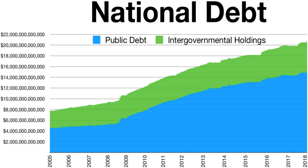According to the Government Accountability Office, the United States is on a fiscally unsustainable path because of projected future increases in Medicare and Social Security spending.